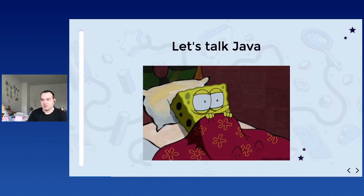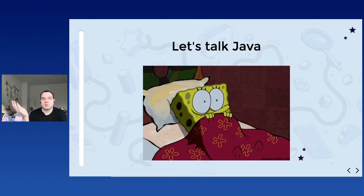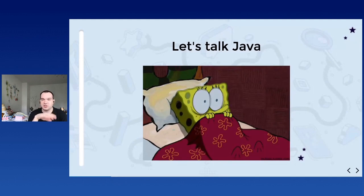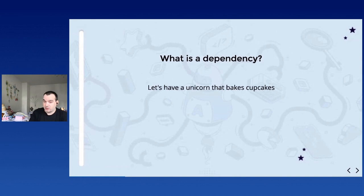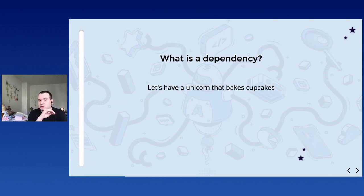We're going to talk about Java. I know everybody has fears of Java, myself included, because there's so much code. My first experience comparing Java and Python was seeing how you can easily open a file in Python - you just type 'open' - and in Java there's code and code and code. But there are some good things in Java that we're not using much in Python, mostly because we don't need them. I'm going to tell you about things we could use to become even better than the Java community. I'll talk about dependency injection, but let's establish some basics first. Let's have a unicorn that bakes cakes.